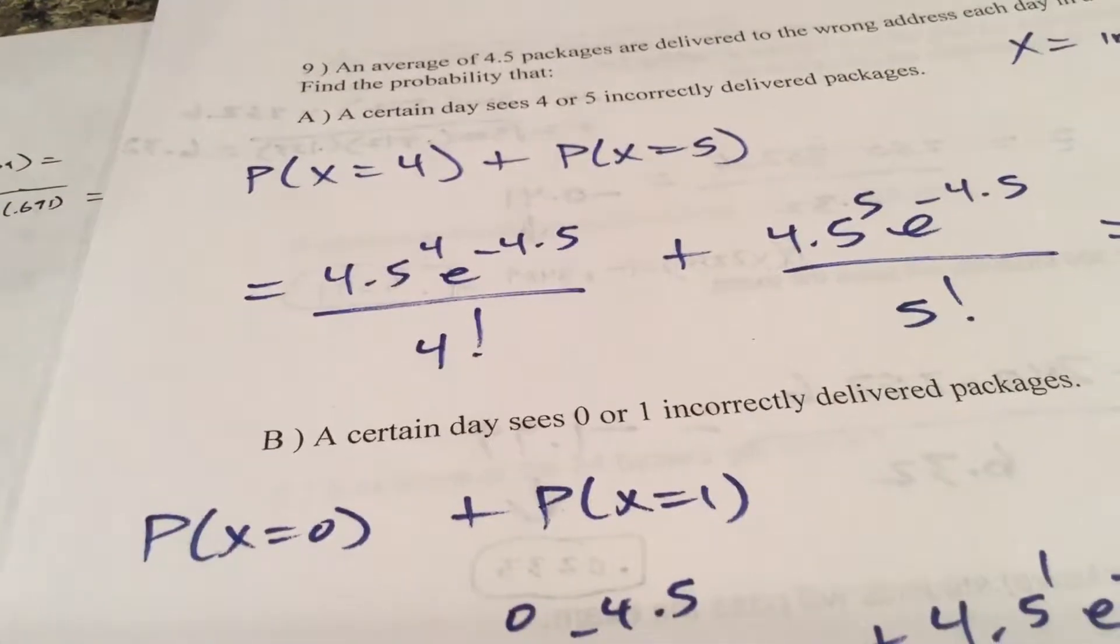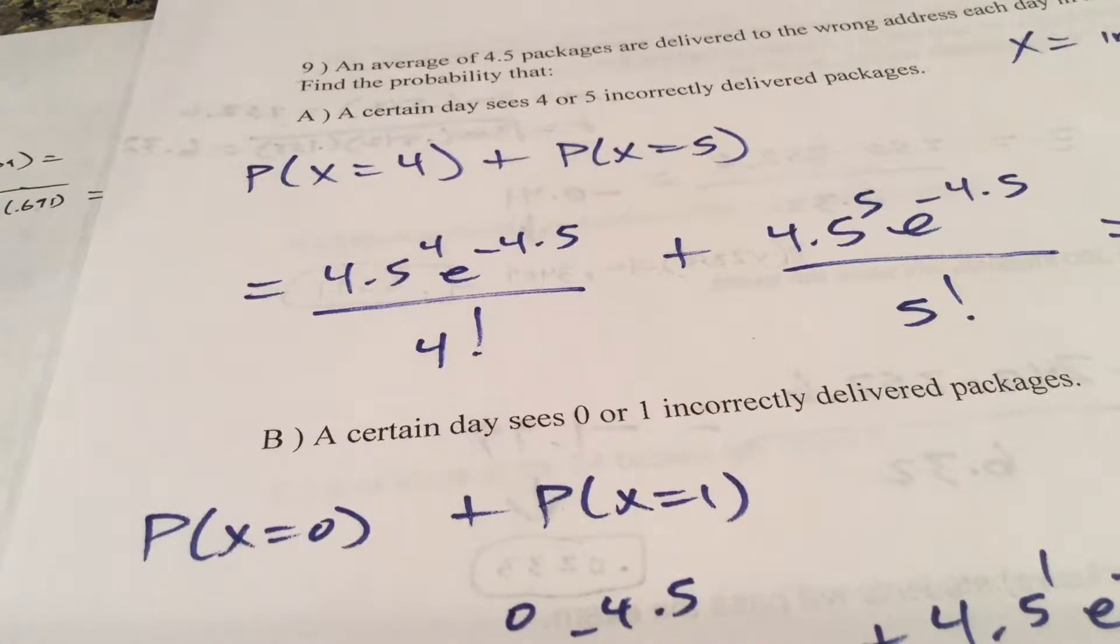Using, I didn't give you the formula but I will give it. Formula is always the mean to x, e to the negative mean over x factorial. There it is, again we're going to talk about this one in class for sure. Certain days see zero or one incorrectly delivered packages.